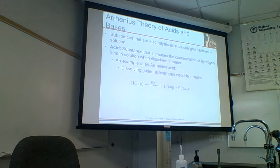Arrhenius acid gives H-plus in solution. Arrhenius base gives OH-minus in solution. So Bronsted is a little bit more broad, and then Lewis is the most broad or most comprehensive of the definitions. What we're going to really focus on is Bronsted.